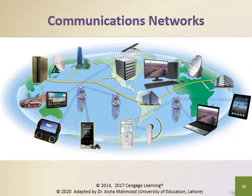A communications network is a collection of computers and other equipment organized to share data, information, hardware, and software. A basic communication system consists of the following equipment: two computers — one to send and one to receive data; communications devices that send and receive data; and a communication channel over which data is sent. This basic model also includes computer software programs that manage the transmission of data between computers.